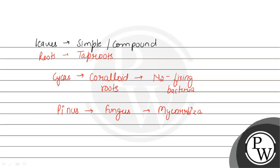Pinus provides shelter to the fungus, and the fungus helps in nutrient absorption. We can see that Pinus seeds have a dependency on the fungus - they will not be able to germinate without fungus. So Pinus shows an obligate relationship with fungus, meaning fungus is compulsory for Pinus for the process of seed germination.